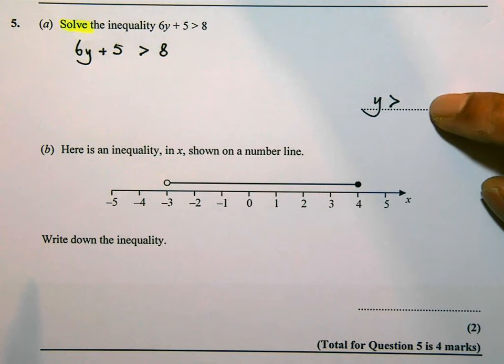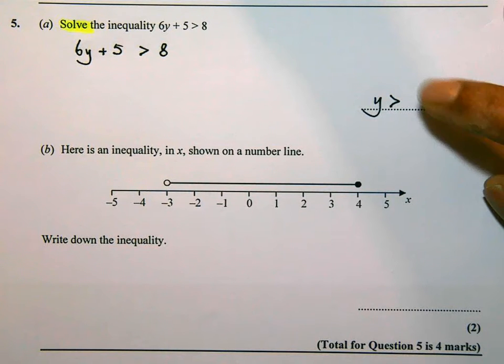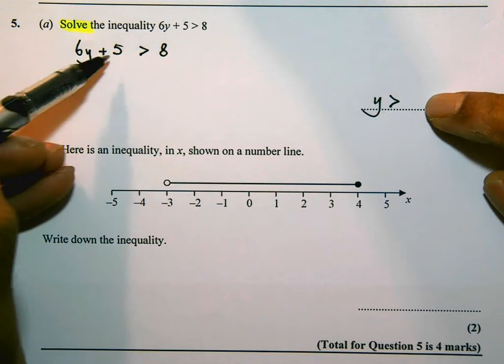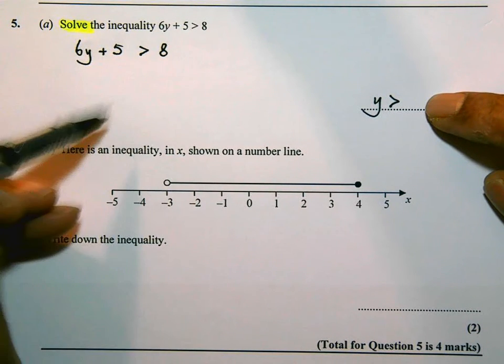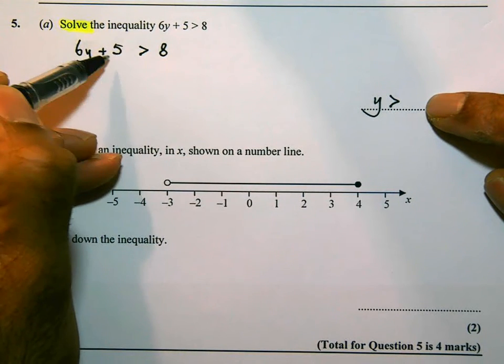So we need to get rid of the 5 first and then the 6. We get rid of the 5. If we use the balance method, the opposite of adding 5 is to take away 5. So 6y is going to be greater than 8 take away 5, which is 3.